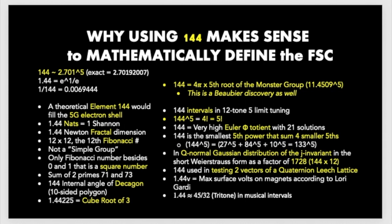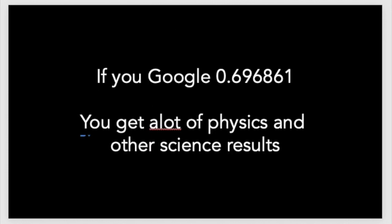There's just so many ways that 144 shows up in the fractal dimension, in the Fibonacci, element 144 would be full at 5G electron shells, the factorials, the intervals, it's very high Euler totient. I mean, look at this, it's everywhere. It's Quaternion, it's Gaussian, it's Hamiltonian.